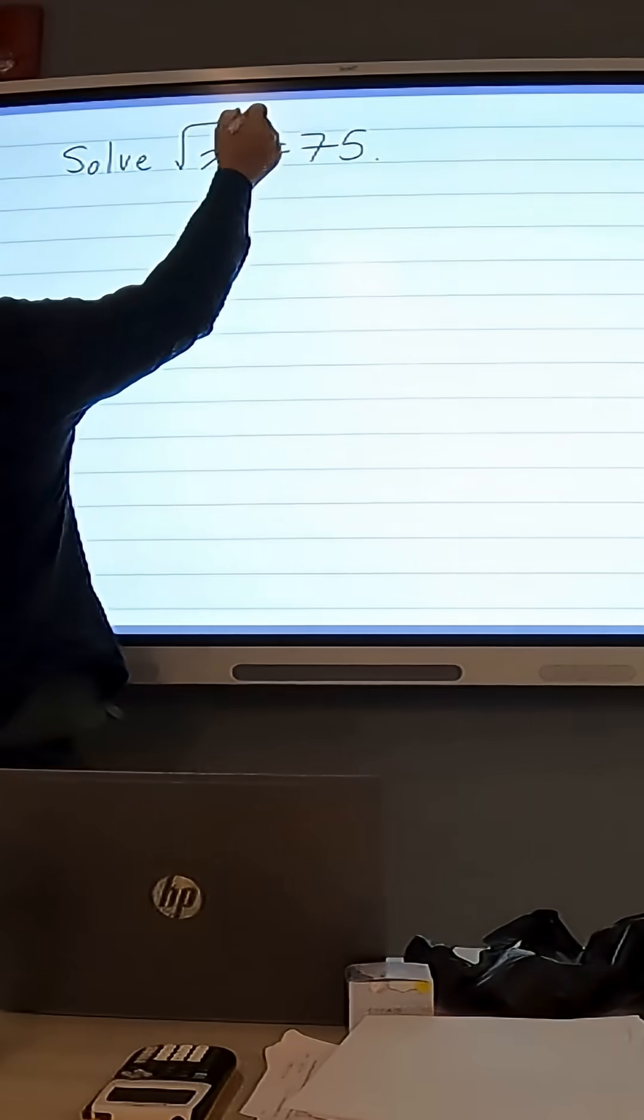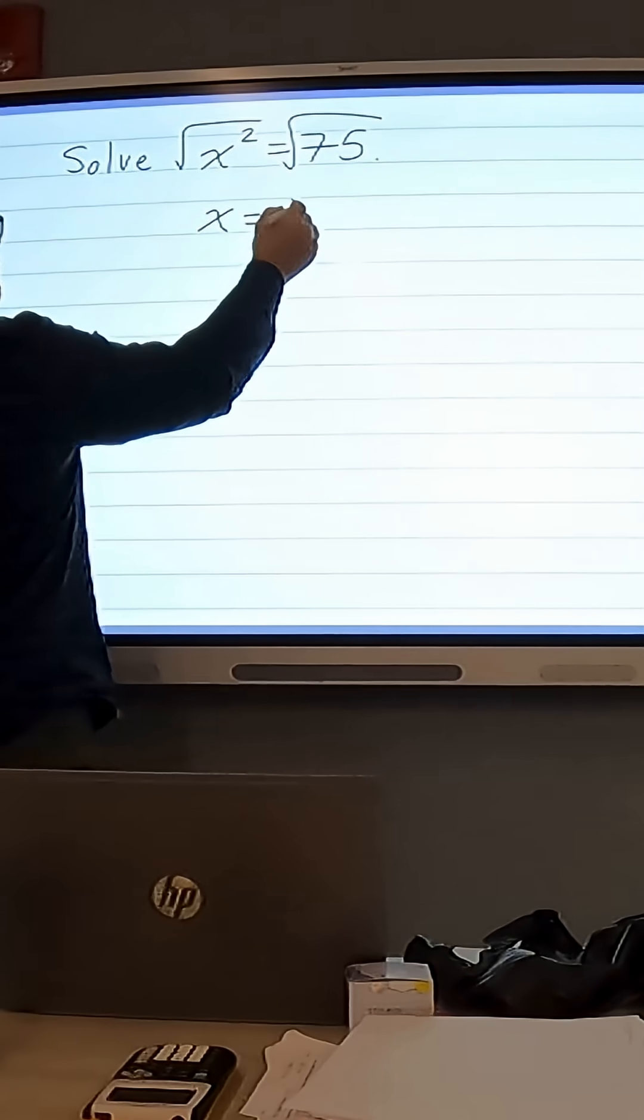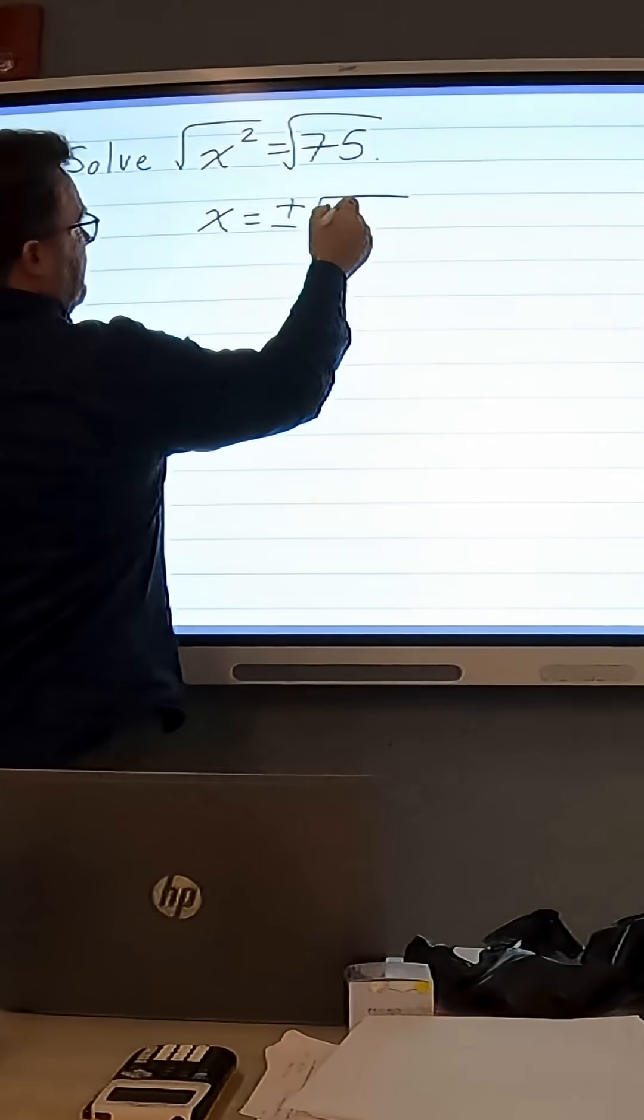So we're going to start by taking the square root of both sides, and we're going to get x equals plus or minus the square root of 75.